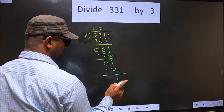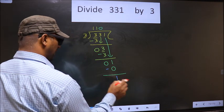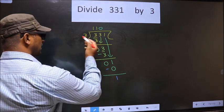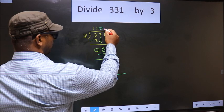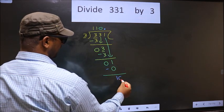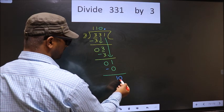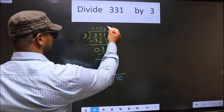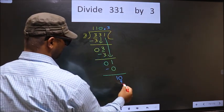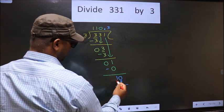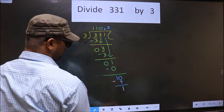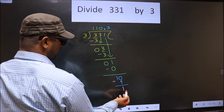Over here we did not bring any number down, and 1 is smaller than 3. So now you can put a dot and take 0 here. So here 10. A number close to 10 in the 3 table is 3 times 3 is 9. Now you subtract. 10 minus 9 is 1.